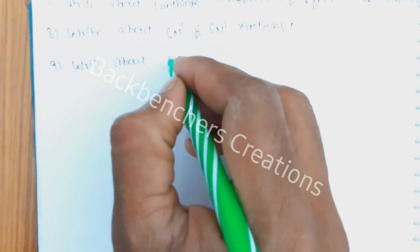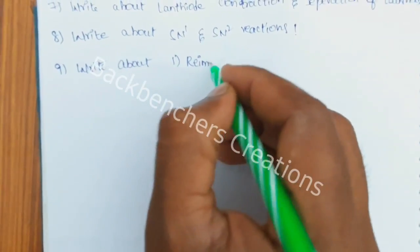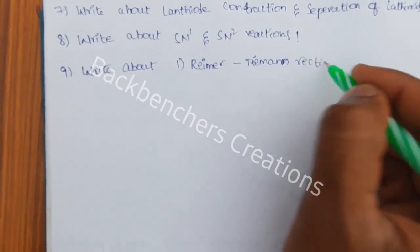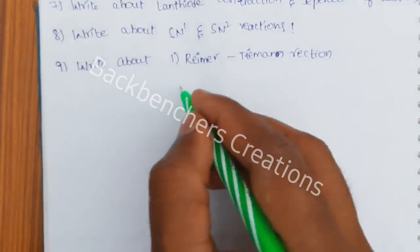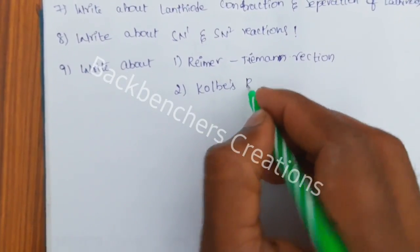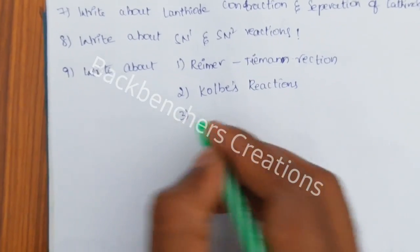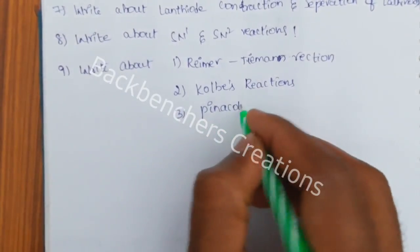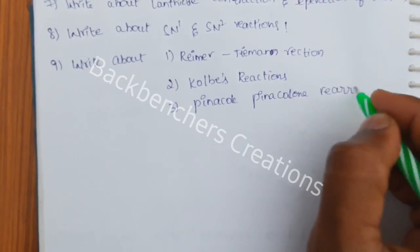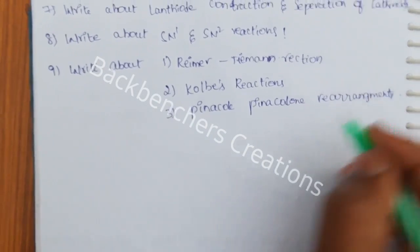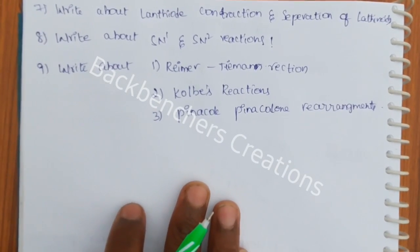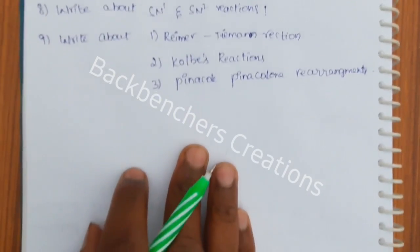Ninth question — choose one: (a) Write about Reimer-Tiemann reactions, (b) Kolbe reactions, or (c) Pinacol rearrangements.